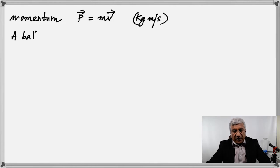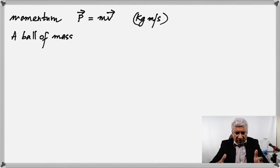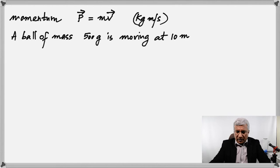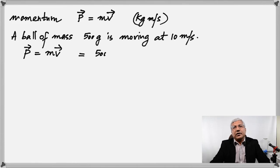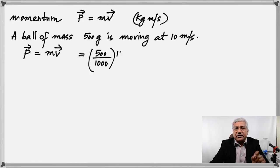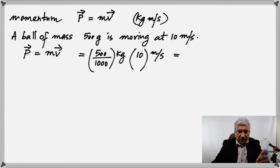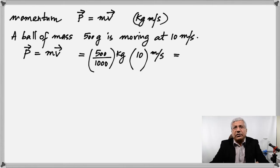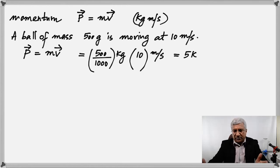Let's work out a problem. Assume there is a ball with a mass of 500 grams moving at 10 meters per second. What is its momentum? Notice that it's given in grams, so you have to change the mass into kilograms by dividing by a thousand, because a thousand grams is one kilogram. Multiply that by the velocity and you get 5 kilogram meter per second — that's the momentum.